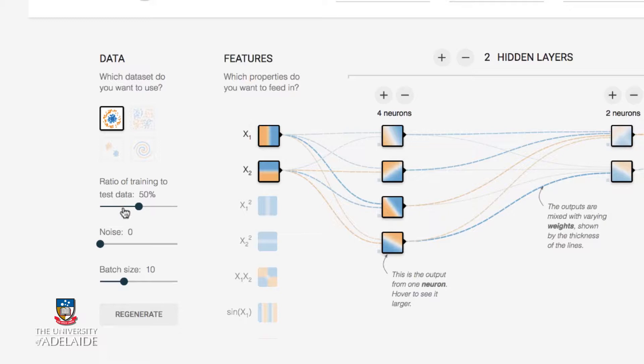Underneath that, we have a slider bar where we can select how much of the data to use for training and how much of the data to use for testing. And of course, you shouldn't use all of your data for training because the test data has to be independent. The test data has to be unseen by the network as it's training.